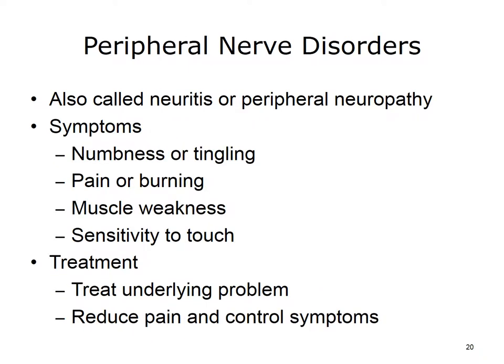Peripheral nerve disorders, also called neuritis or peripheral neuropathy, interrupt the messages between the brain and the rest of the body. There are more than 100 kinds of peripheral nerve disorders, and they can affect one nerve or many nerves. Some are the result of other diseases, like diabetic neuropathy. Others, like Guillain-Barré syndrome, happen after a virus infection. Still others, like carpal tunnel syndrome, occur due to nerve compression. Symptoms include numbness, pain, burning or tingling, muscle weakness, and sensitivity to touch. Treatments aim to treat the underlying problem, reduce pain, and control symptoms.